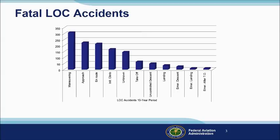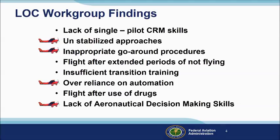In a recent 10-year period, there were more than 1,200 fatal loss of control accidents. Many of those accidents occurred in the approach phase of flight — think stall, spin, crash — and many resulted from an unstabilized approach or a failure to go around. A recent study found that most fatal GA loss of control accidents have one or more causal factors, including unstabilized approaches, go-arounds, over-reliance on automation, and aeronautical decision-making.